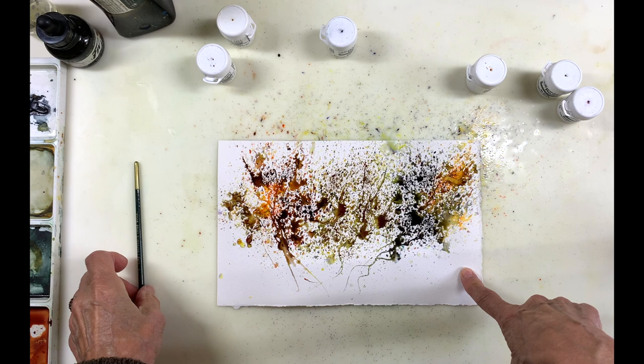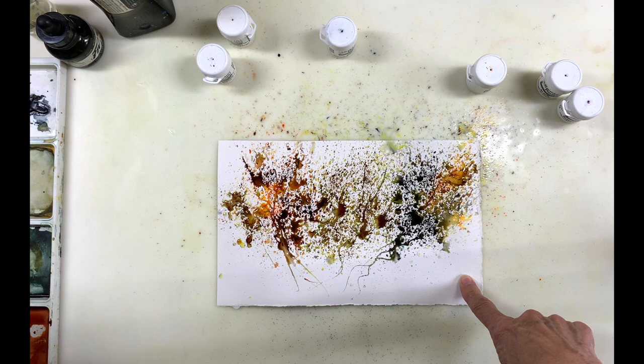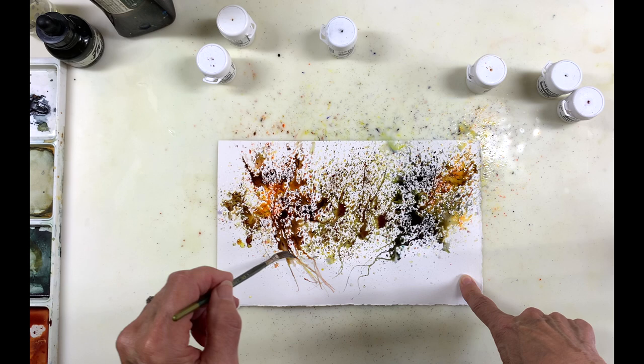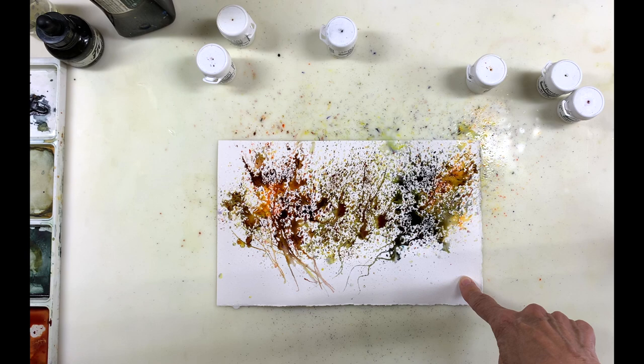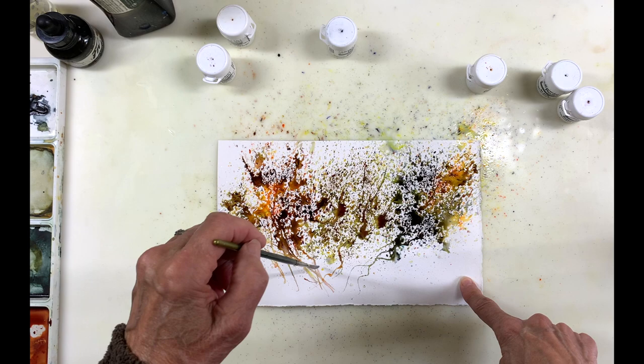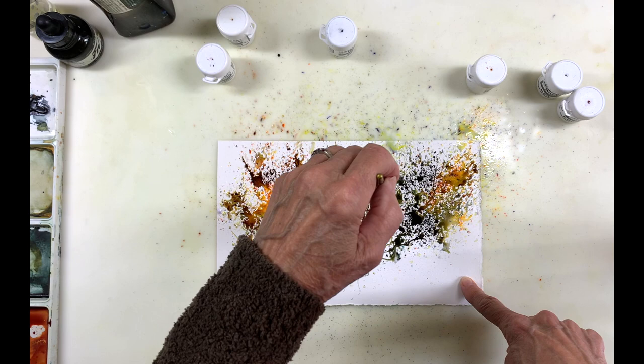One thing I want to mention is that brusho once it's dry is permanent. That's something to keep in mind when you are adding it to your watercolors. So while it's still wet, you can play around with it. You can lift some of it. It won't lift it back to the white paper, but you can lighten it.